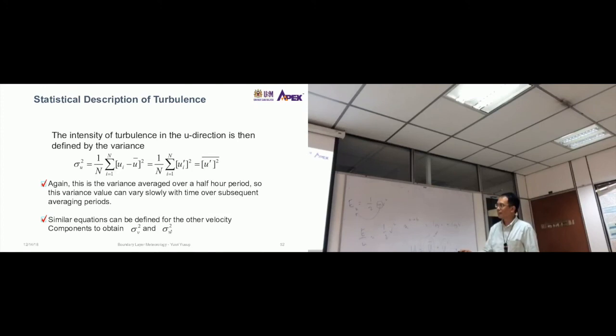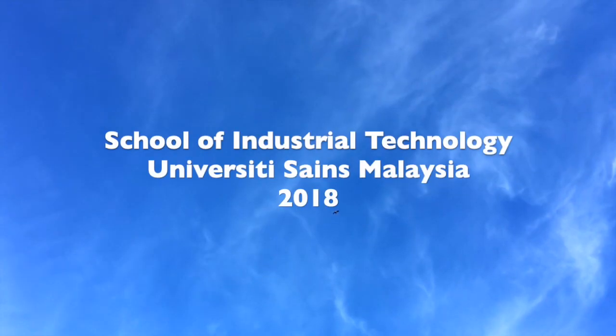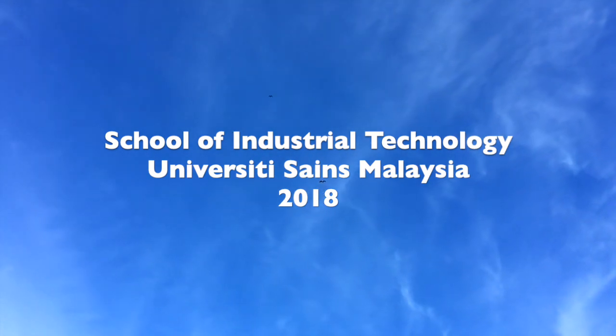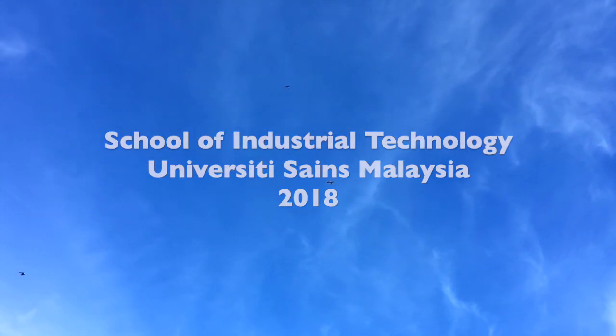So again, this is the variance average over a half hour period. So this variance value can vary slowly with time over subsequent averaging periods. So this one will change depending with time. So similar equations can be defined for other velocity components to obtain sigma v squared and sigma w squared for the different components. So this is the variance.